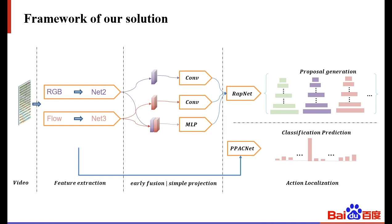Our framework consists of four parts: feature extraction, feature combination, RepNet for proposal generation, and double pyramid attention classification network for video-level action classification. We adopt models pre-trained on Kinetics or ActivityNet to generate RGB and optical flow based snippet-level video representations. Then we obtain action proposals using two-stream modalities. Afterwards, we utilize soft NMS as post-processing to suppress redundant proposals and finally equip them with the action categories for this task.